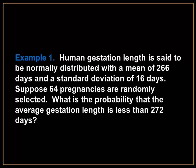For example, human gestation length is said to be normally distributed with a mean of 266 days and a standard deviation of 16 days. Suppose 64 pregnancies are randomly selected, what is the probability that the average gestation length is less than 272 days?